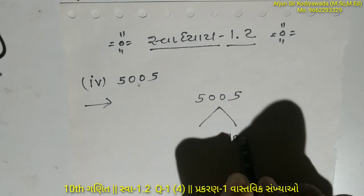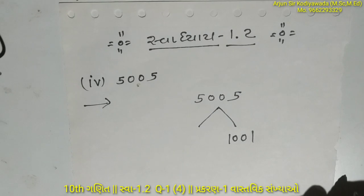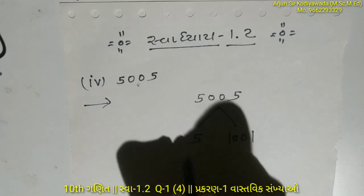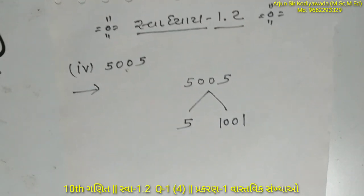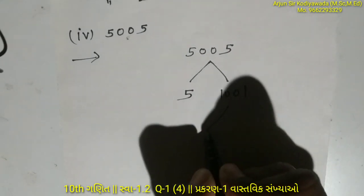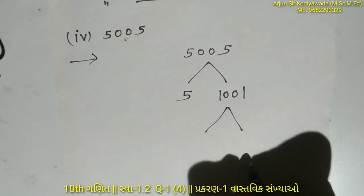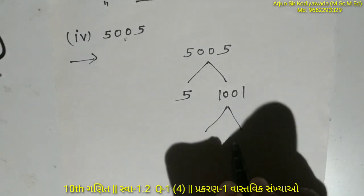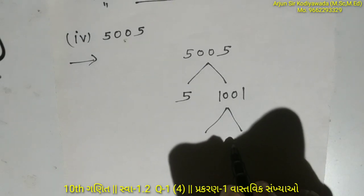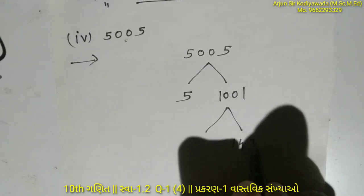Now we have 1001. This number can be divided by 7. When we divide 1001 by 7, we get 143.